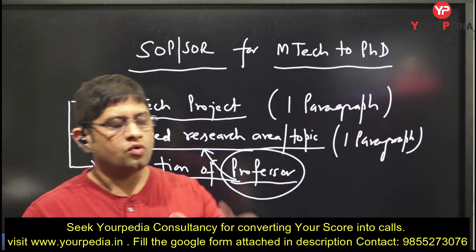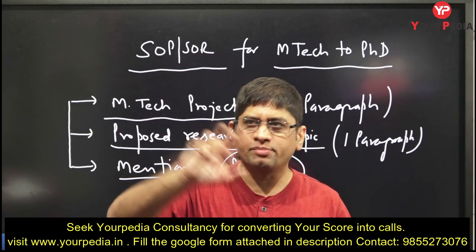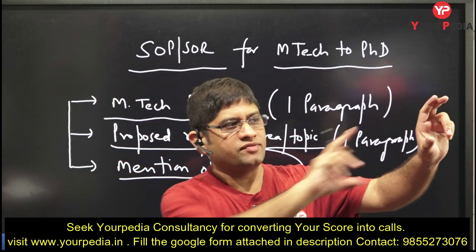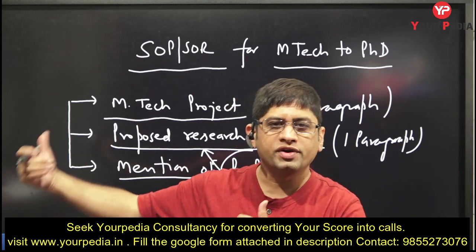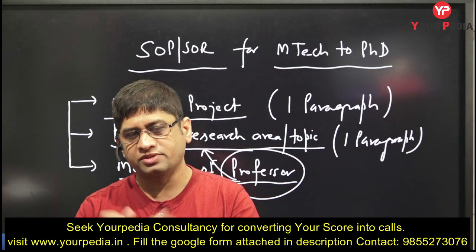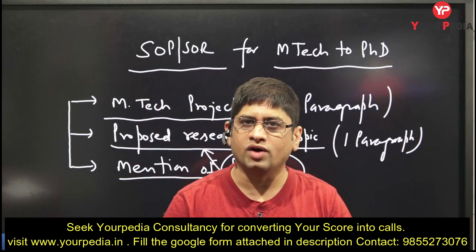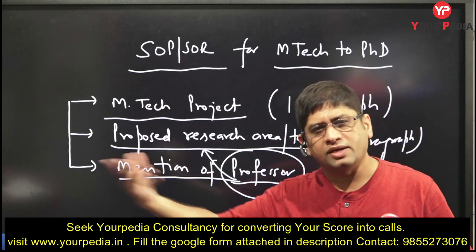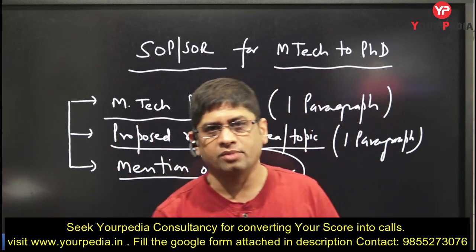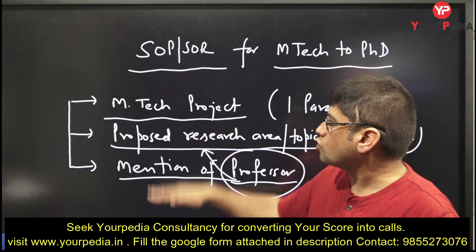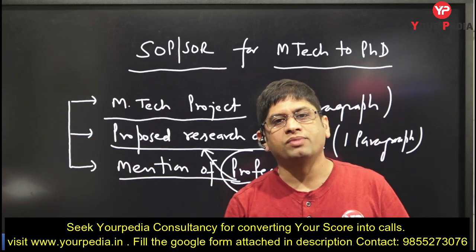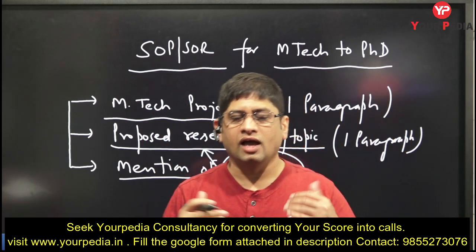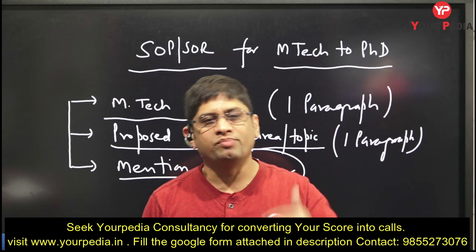A typical SOP or statement of research has this structure: the first paragraph covers your masters work and the topic you explored, and states that you want to further explore options in this domain. The second paragraph describes the specific area in which you want to work. The third paragraph mentions the particular IIT, the lab, and the department — and why you want that specific department. These two to three paragraphs complete your research proposal or research statement.